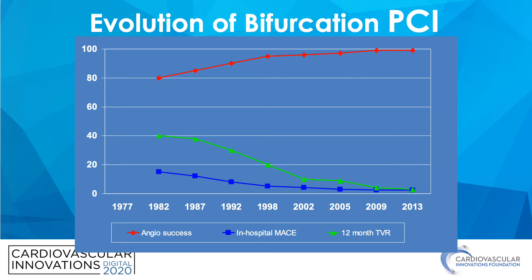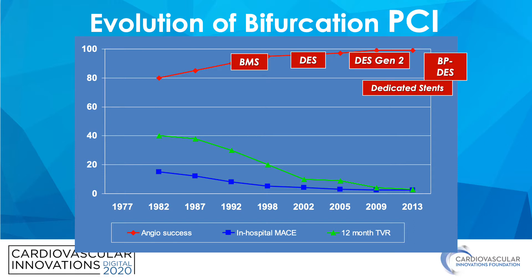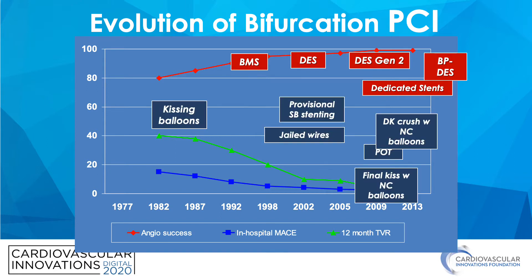Bifurcation PCI has had an evolution over the years with increasing angiographic success and decreasing TVR and in-hospital MACE. This corresponds with the evolution in stent technology as well as the evolution and development of more advanced bifurcation techniques.